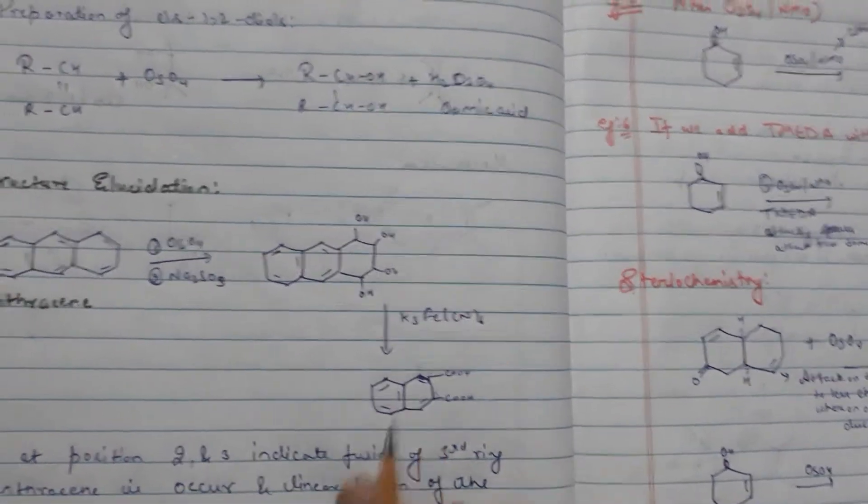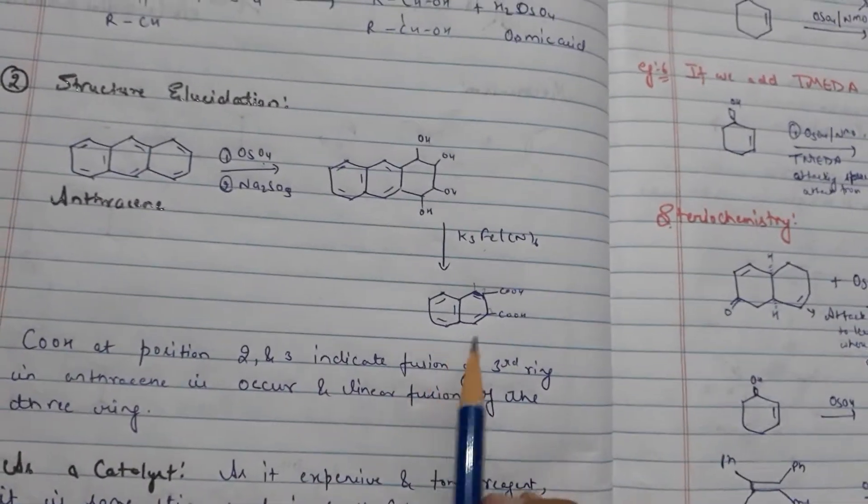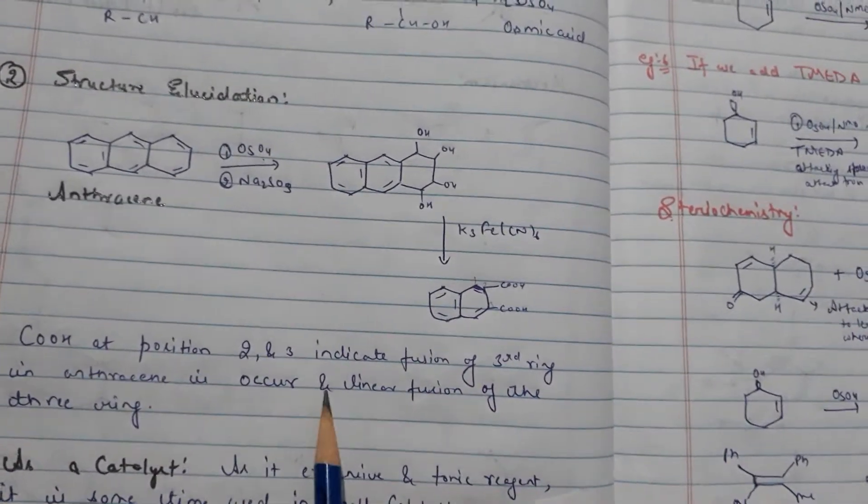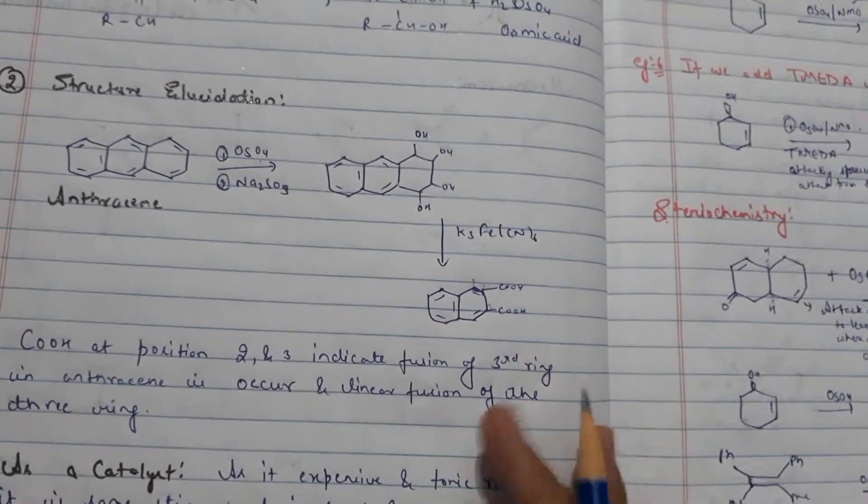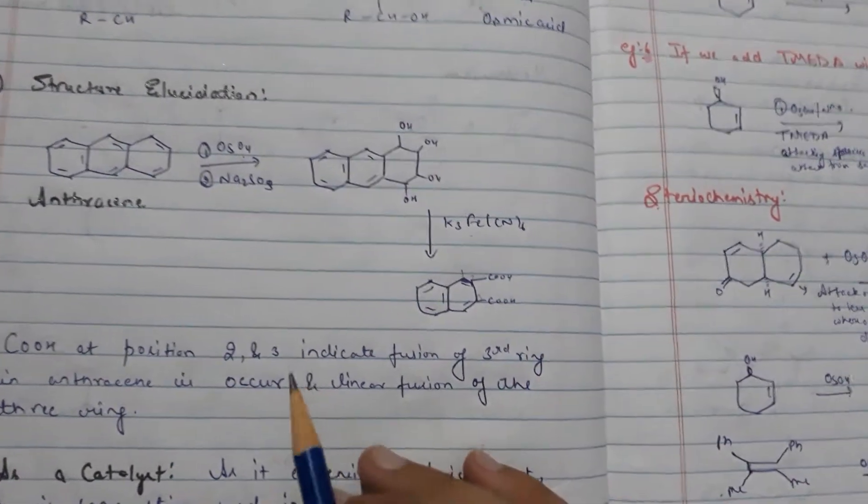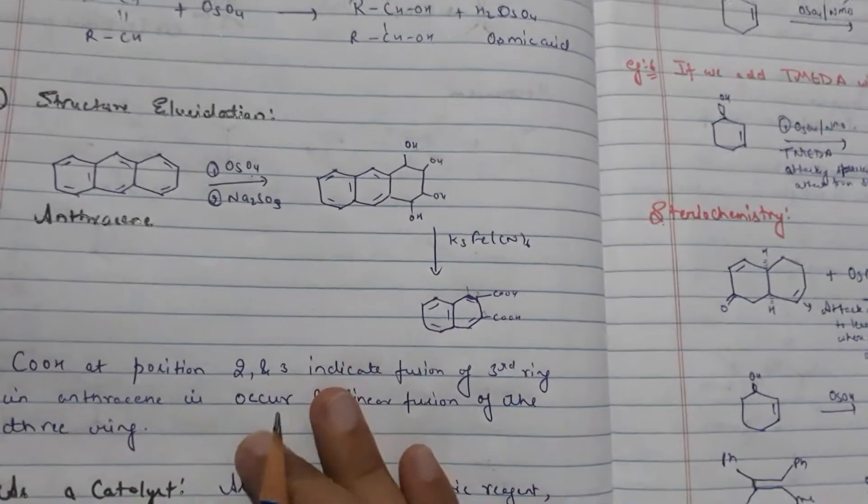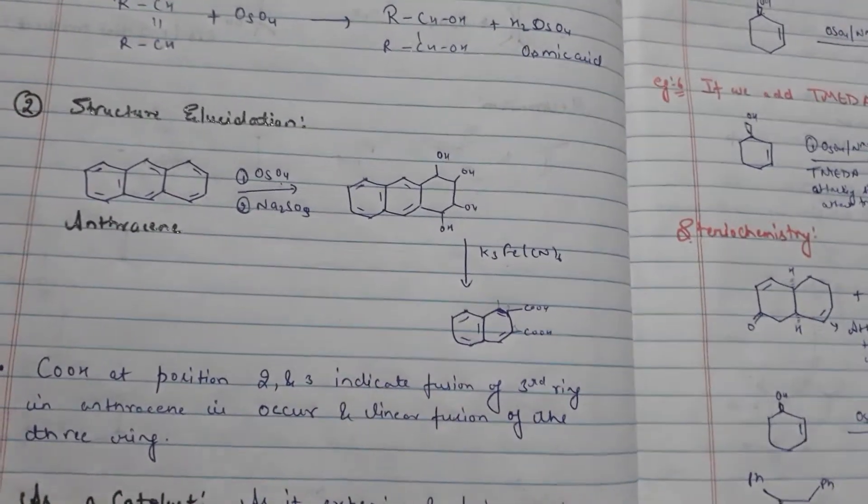So it indicates that presence fusion of 3rd ring in anthracene is occurring linearly. Linearly fusion is occurring. So it will tell about structure elucidation.